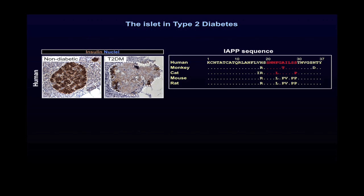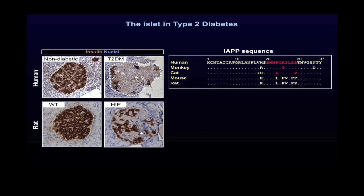In contrast, rodent IAPP is non-toxic and non-amyloidogenic, and these species do not develop diabetes spontaneously. However, if we overexpress human IAPP in the beta cells of rodents, this leads to an islet pathology that is comparable to that of human subjects with type 2 diabetes, as you can see here.